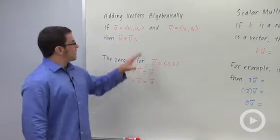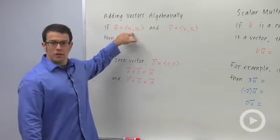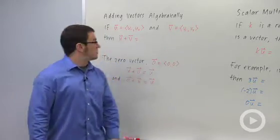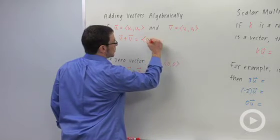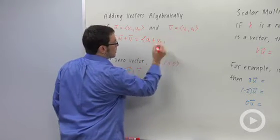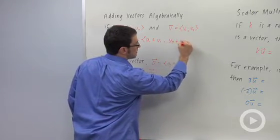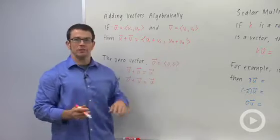Adding vectors algebraically. Let's say we have two vectors given to us in component form. So u is u1 comma u2, and vector v is v1 comma v2. What would their sum be? Well, the sum is u1 plus v1. You add the first components, and then u2 plus v2. You add the second components. So you're adding the two vectors component-wise.